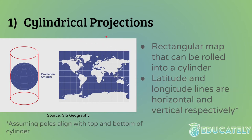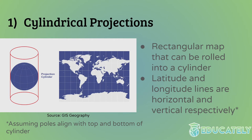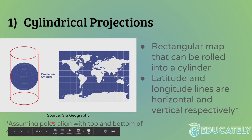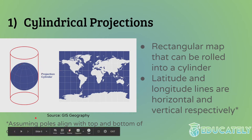An interesting thing to note with cylindrical projections is that the latitude and longitude lines are generally horizontal and vertical. As a quick review: latitude lines go horizontally and longitude lines go vertically. The poles of the globe — the north pole and the south pole — align perfectly with the top and bottom of the cylinder. The most common cylindrical projection is the Mercator map, which is what Google Maps uses.